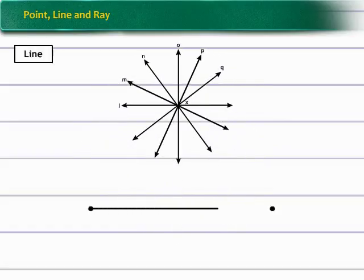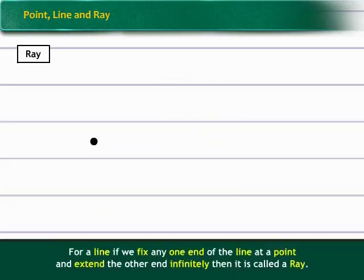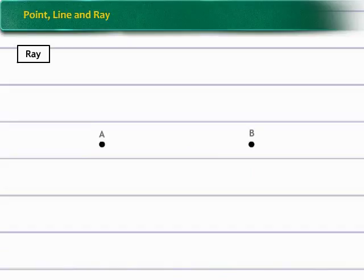But there can be one and only one line passing through any two distinct points P and Q. Now for a line, if we fix any one end of the line at a point and extend the other end infinitely then it is called ray. That is, if we mark point A and B on paper and from point A starts drawing a line passing through B till infinite, then this line is called ray AB.